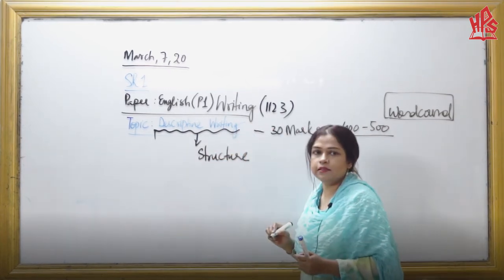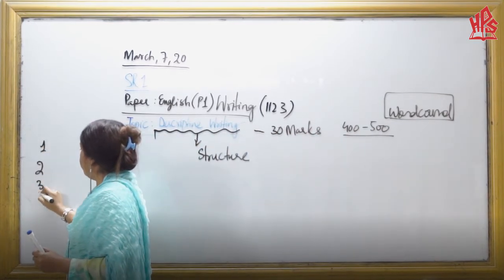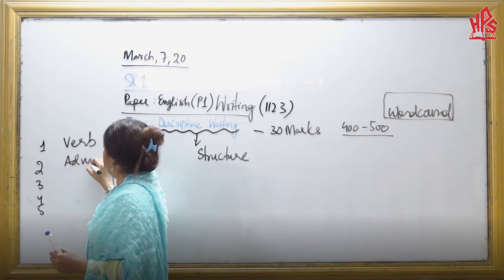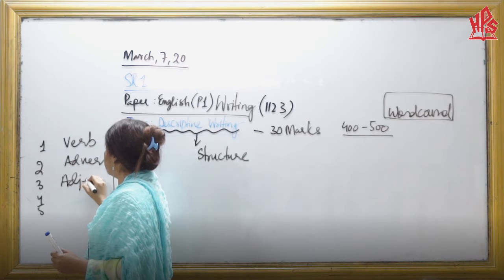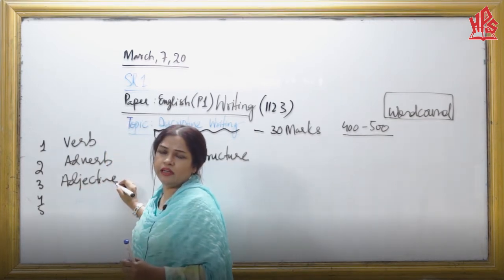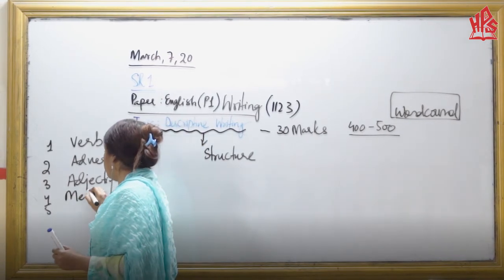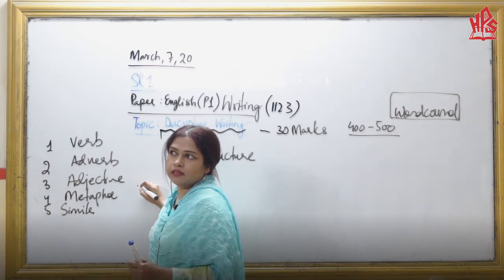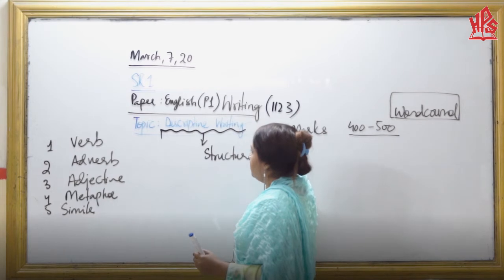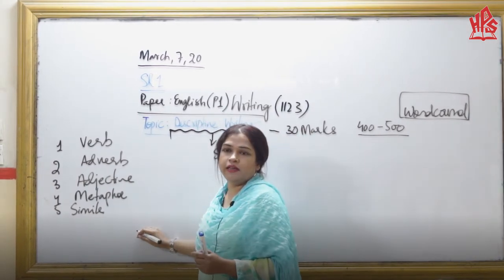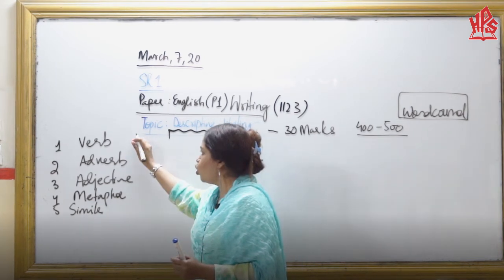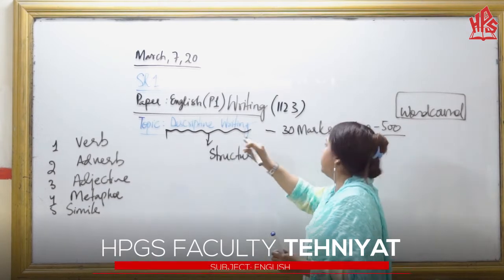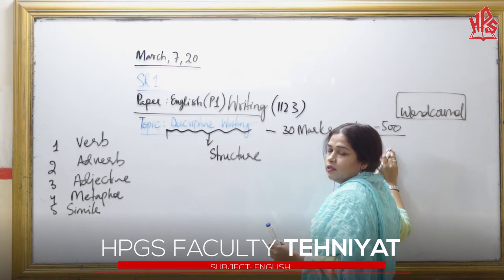As far as O-level is concerned, whenever they speak about descriptive writing, they have something to say about verb, adverb, and adjective. This is a reminder that these three elements are taken from your parts of speech, and apart from these, you have to discuss metaphor and simile. These major elements are endorsed in every Cambridge system book, and you need to follow them whenever you plan your composition on descriptive writing. The target is 400 to 550 words.